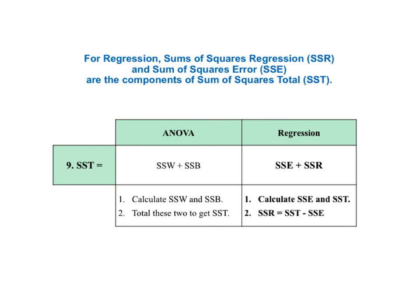For regression, sums of squares regression and sum of squares error are the components of the sum of squares total. With ANOVA, we use the data to calculate SSW and SSB, then total them to get SST. With regression, we use the data to calculate only one of the two components — the sum of squares error, SSE — and also the sum of squares total, SST. Then the second component, SSR, the sum of squares regression, is calculated as SST minus SSE.